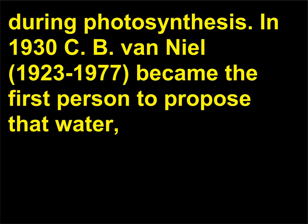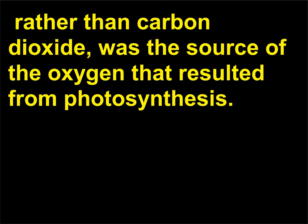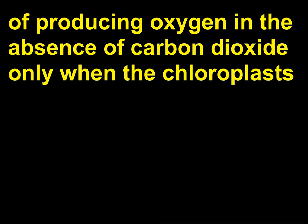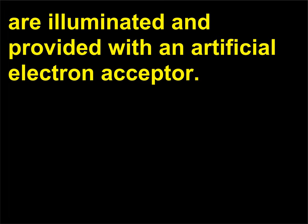In 1930, C.B. Van Niel (1897–1985) became the first person to propose that water, rather than carbon dioxide, was the source of the oxygen that resulted from photosynthesis. In 1937, Robert Hill (1899–1991) discovered that chloroplasts are capable of producing oxygen in the absence of carbon dioxide only when the chloroplasts are illuminated and provided with an artificial electron acceptor.